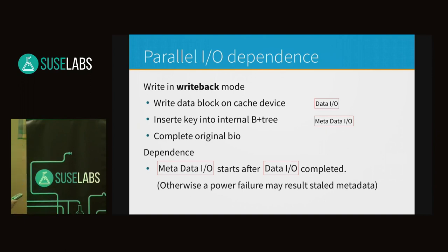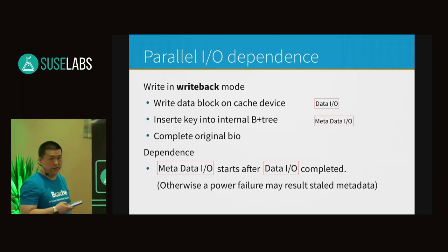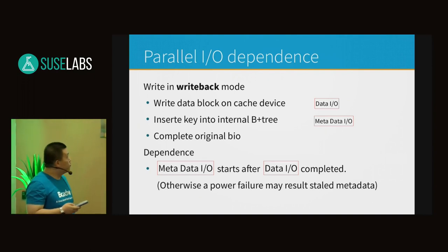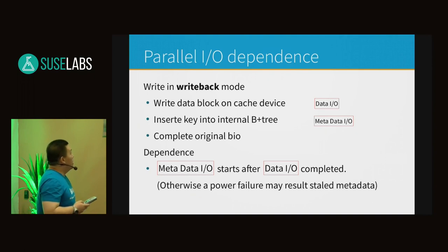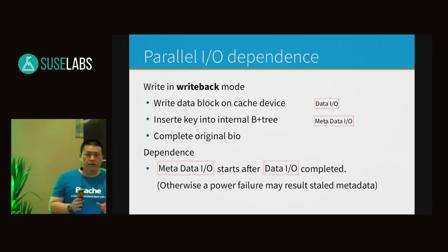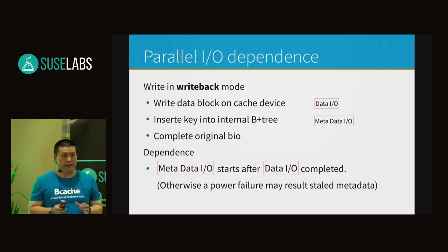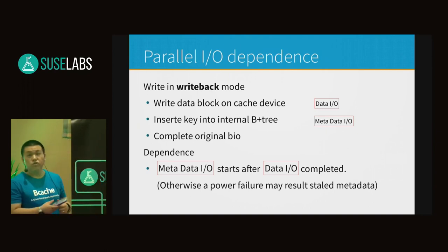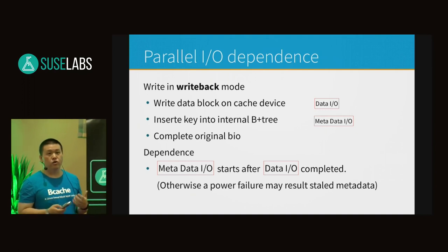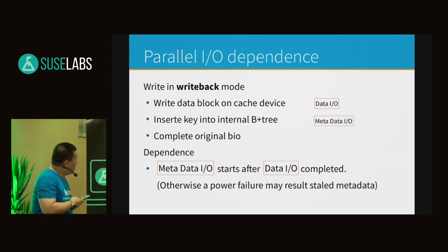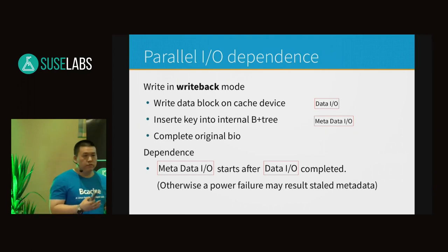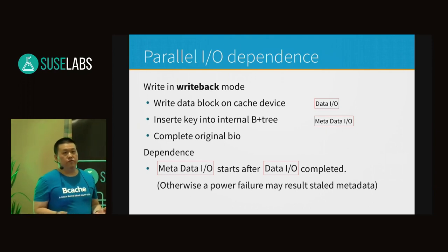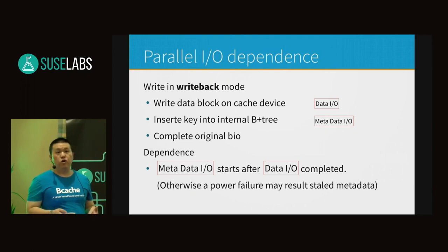First, write a data block on the cache device (meaning SSD) — that's the data I/O. Then insert a key into the internal B+ tree — that is the metadata I/O. After both data I/O and metadata I/O are completed, we complete the original BIO to indicate to the caller that the I/O is done. There is a dependency: the metadata I/O should start after the data I/O. Otherwise, if there is a power failure, we will encounter a stale pointer in the metadata.